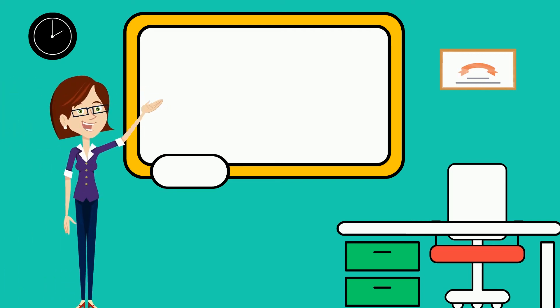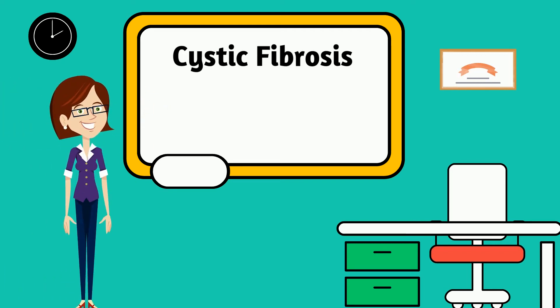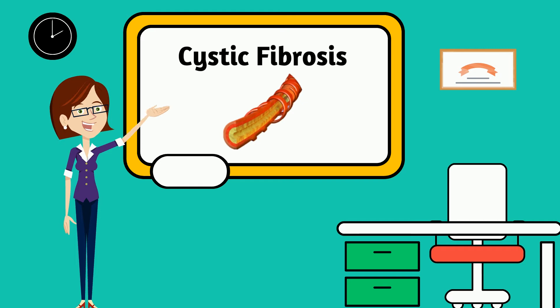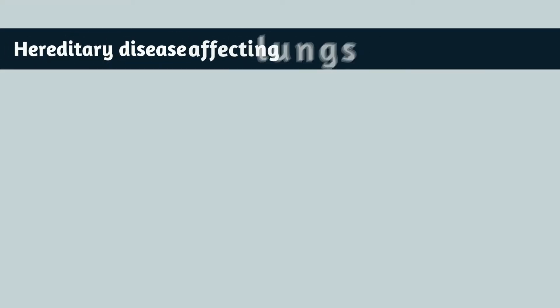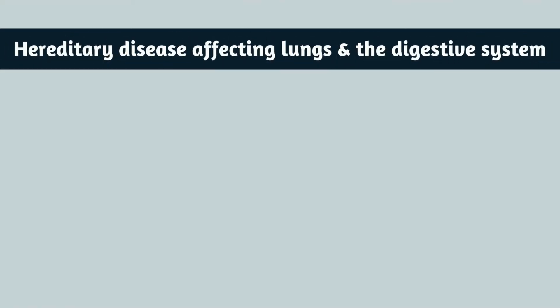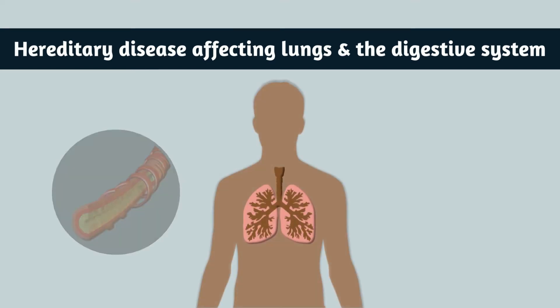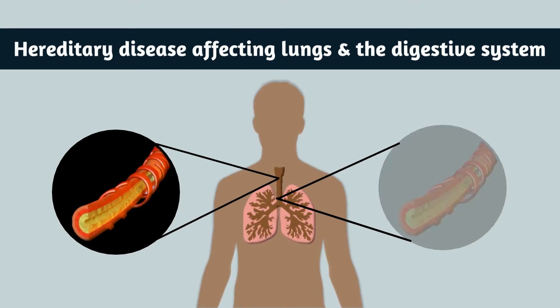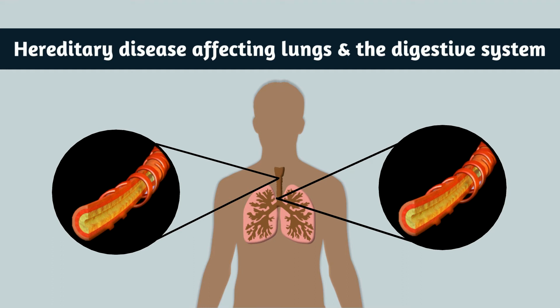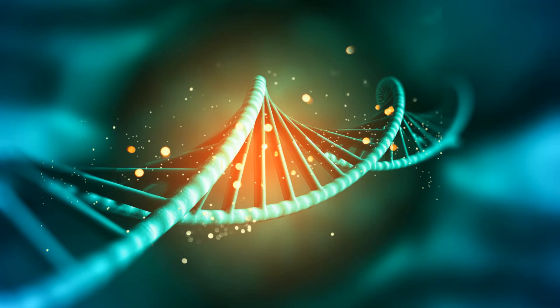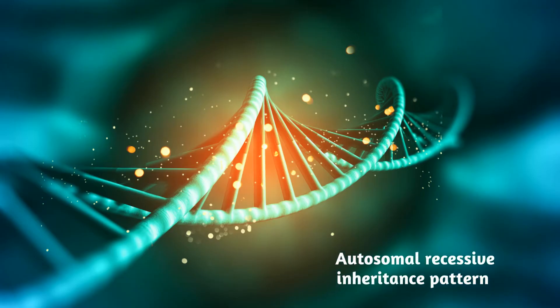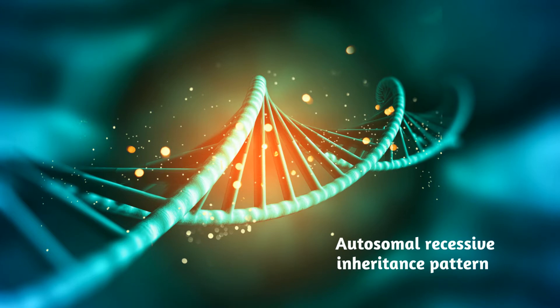Hey students! Welcome to scadia.com. Let's talk about cystic fibrosis. Cystic fibrosis is a hereditary disease affecting the lungs and the digestive system. The body produces thick sticky mucus clogging the lungs and obstructing the pancreas. This condition has an autosomal recessive pattern of inheritance, meaning it requires two diseased alleles for the individual to be a patient of cystic fibrosis.